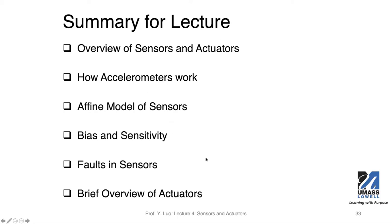So what we have talked about so far are sensors — mostly sensors. We did briefly discuss actuators. We explained from the model perspective how accelerometers work, and we briefly discussed the models, the bias, and other properties. We talked about the faults you can encounter in sensors, which are physical devices. That's what we have discussed so far.